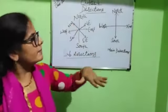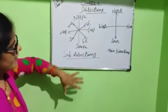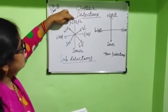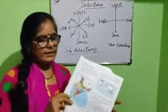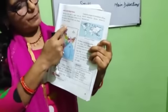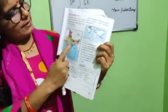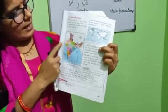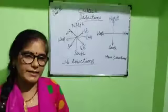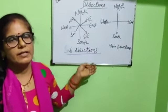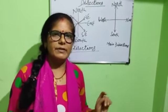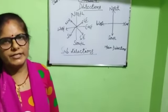On a map: the top is north, the bottom is south, the right is east, and the left is west. We have completed this chapter. I hope you understood this chapter. Meet you in the next class. Bye.